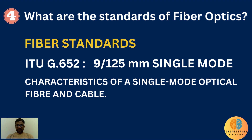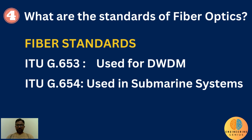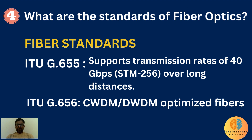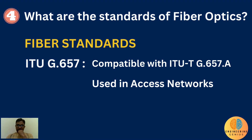The most modern is G652D fiber, which has low attenuation — a maximum of 0.25 decibels per kilometer at 1550 nanometers. ITU G653 is used in DWDM applications. ITU G654 is used in submarine systems. ITU G655 fibers support transmission rates of 40 gigabits per second over long distances. ITU G656 covers CWDM and DWDM optimized fibers. ITU G657 fibers are system-compatible with ITU-T G657A and ITU-T G652D fibers in access networks.